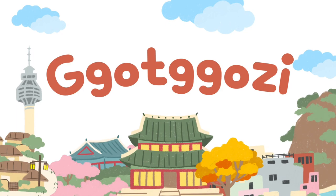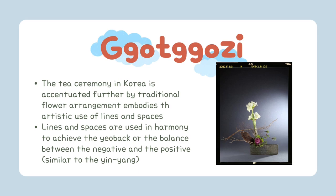The tea ceremony is accentuated further by traditional flower arrangements called gotgazi. This floral arrangement embodies the artistic use of lines and spaces, used in harmony to achieve the yiu bak, or the balance between the negative and the positive, similar to the yin and yang. There is a space between flowers and branches to denote delicacy, airiness, and fragility. The lines are emphasized through the natural curves of stems, branches, leaves, and flowers, placed in a free-flowing, organic trajectory. The finished floral arrangement can be appreciated to achieve a reflective and peaceful state of mind.